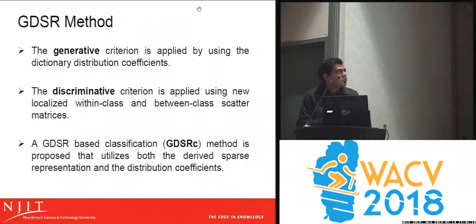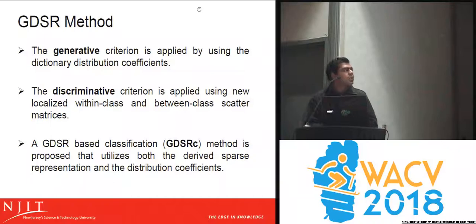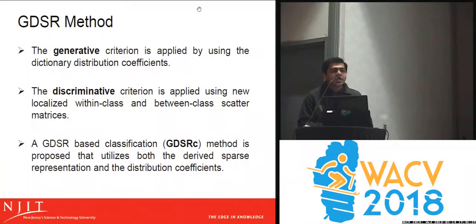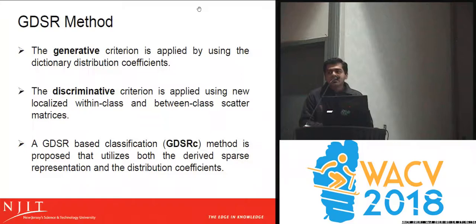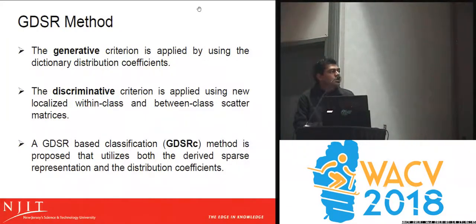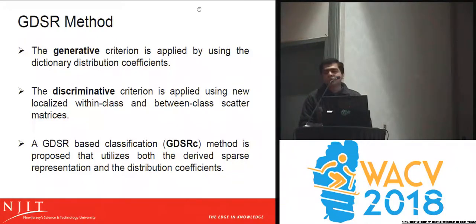Our proposed method, GDSR, has three novelties. First, we apply a generative criterion wherein we use dictionary distribution coefficients, which are estimated by representing every dictionary item as a linear combination of the training samples. The second is a discriminative criterion applied using new localized within-class and between-class scatter matrices. We also propose a GDSR-based classification method that utilizes both the derived sparse representation and the distribution coefficients.